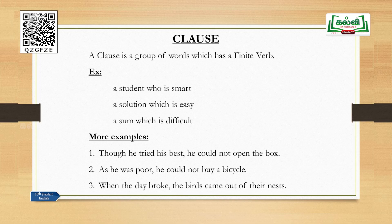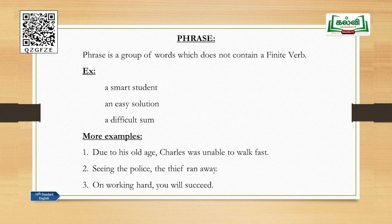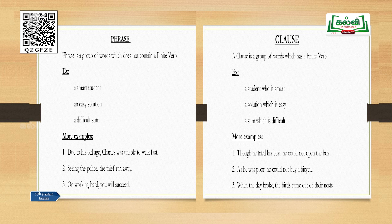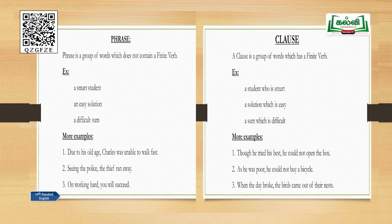A clause is a group of words which contains a finite verb. Every phrase can be changed into a clause by adding a finite verb. 'A smart student' is a phrase; 'a student who is smart' is a clause — we added 'is.' 'An easy solution' is a phrase; 'a solution which is easy' is a clause — 'is' is added. 'A difficult sum' is a phrase; 'a sum which is difficult' is a clause. A phrase has no finite verb; a clause has a finite verb.